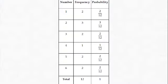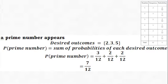From the table of outcomes obtained, the probability of a 1 showing up is 2 out of 12, and that of 2 showing up is 3 out of 12, and that of 3 showing up is 2 out of 12, and that of 4 showing up is 1 out of 12, and that of 5 showing up is 2 out of 12, and that of 6 showing up is 2 out of 12.